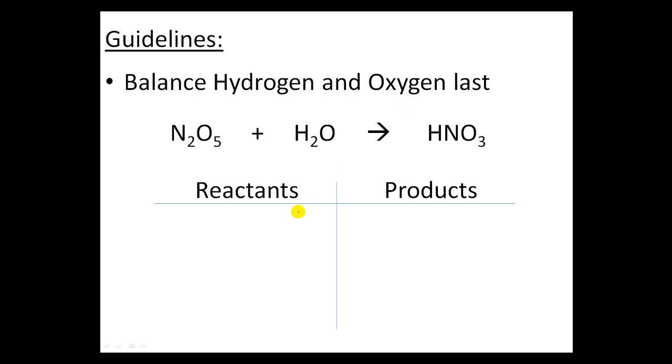The number one guideline that we usually follow is to balance the hydrogens and the oxygens last. What I like to do is set up my T chart - reactants on one side, products on the other. And I write down what elements are involved: nitrogens, oxygens, and hydrogens. Under products I should have nitrogens as well, oxygens and hydrogens. Then I need to set up how many of each do I have initially. On the reactant side, I have two nitrogens, six oxygens, two hydrogens. Over here, how many nitrogens? I've got one. How many oxygens? I've got three. And how many hydrogens? One.